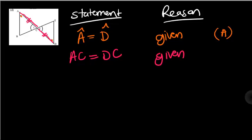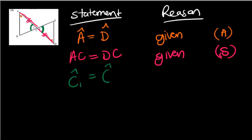And then lastly I can see that C1 is equal to C2. Again this is given by the diagram and this is an angle.